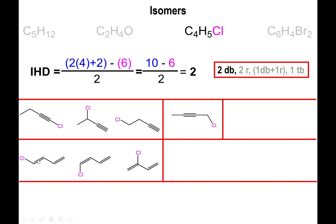The reason two of those are listed as separate possibilities is because of geometric isomers. When you have a double bond, the molecule is constrained to a trigonal planar shape and the bond is not allowed to rotate. So chlorine pointing up and to the left is fixed there, while the other connection pointing downward is also fixed. These two are different isomers — we call one a trans isomer (substituents on opposite faces) and the other a cis isomer (substituents on the same side).